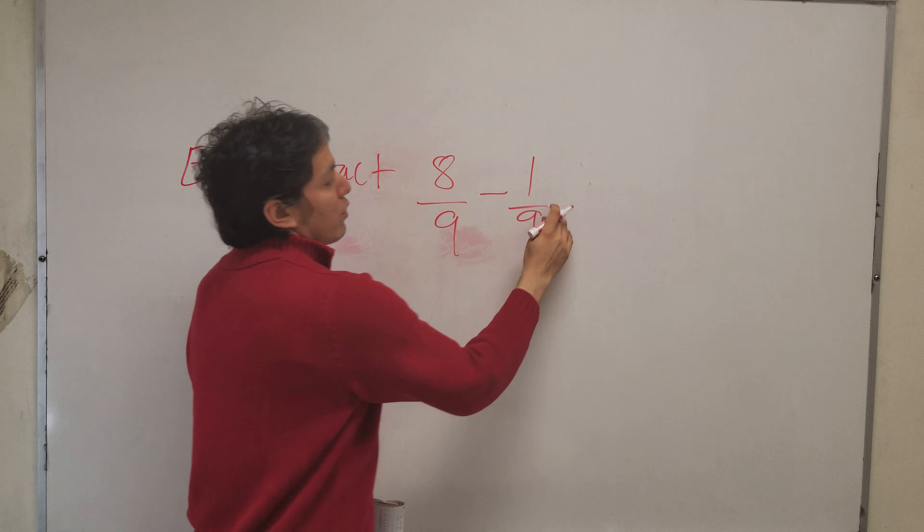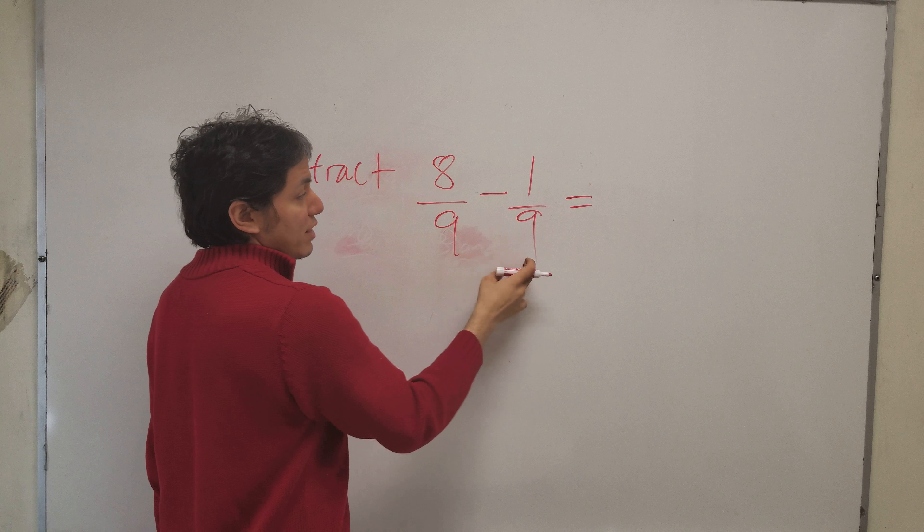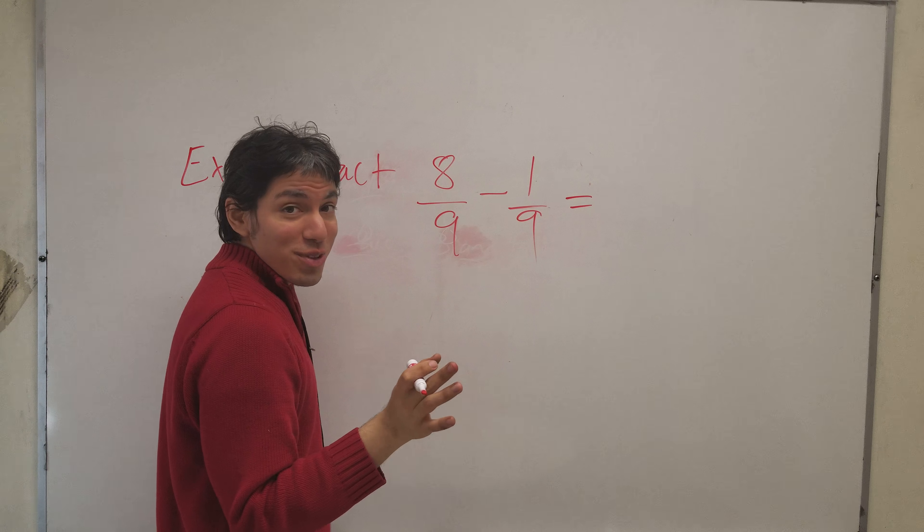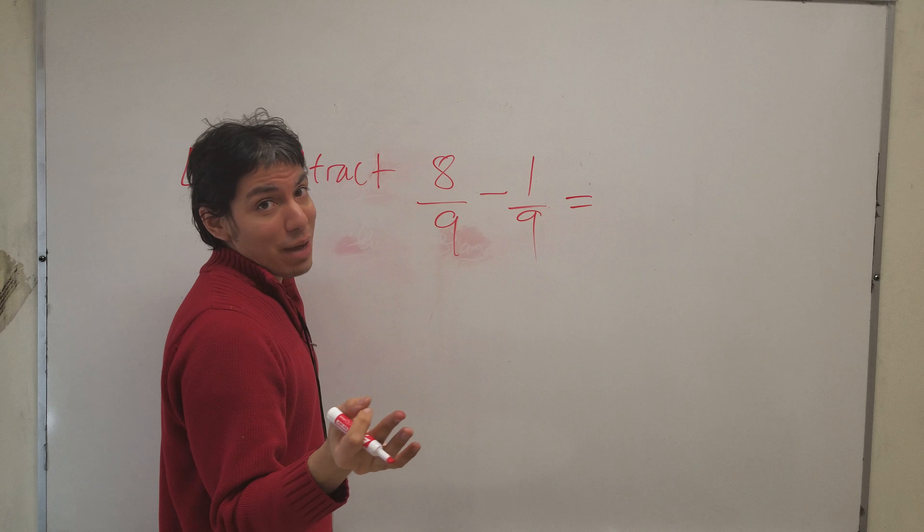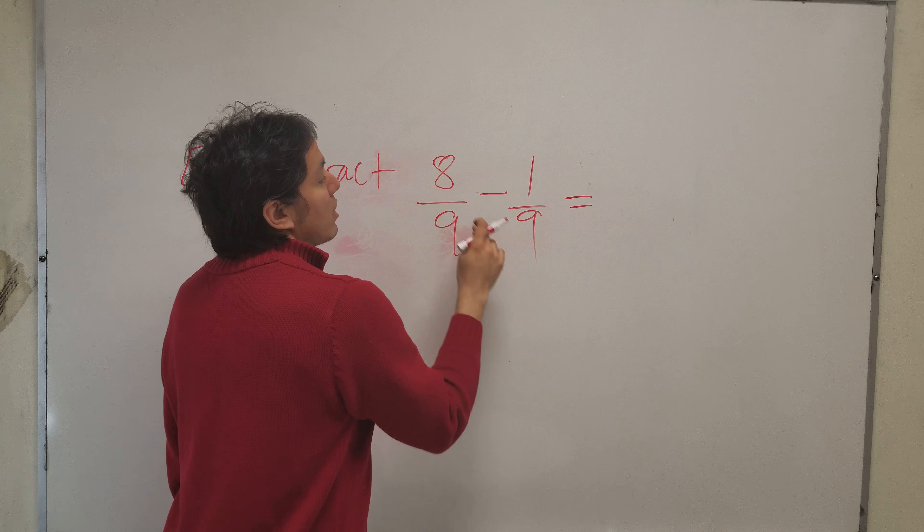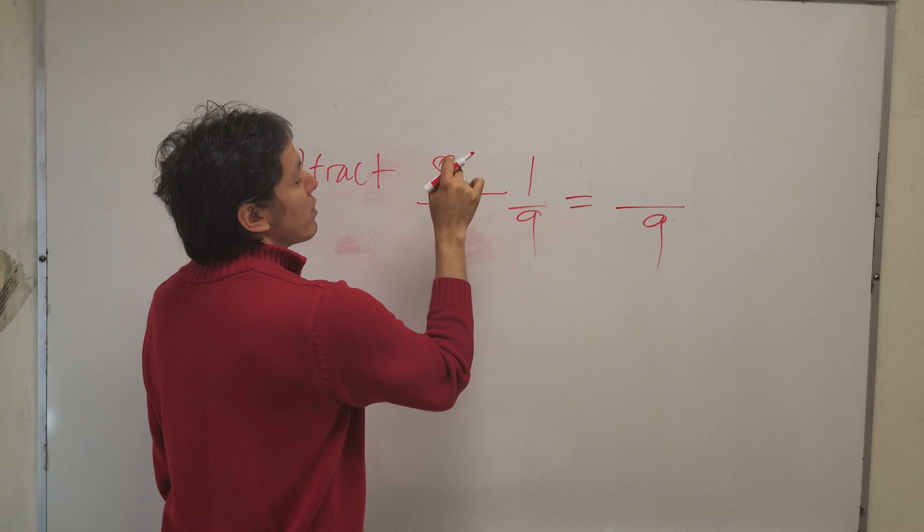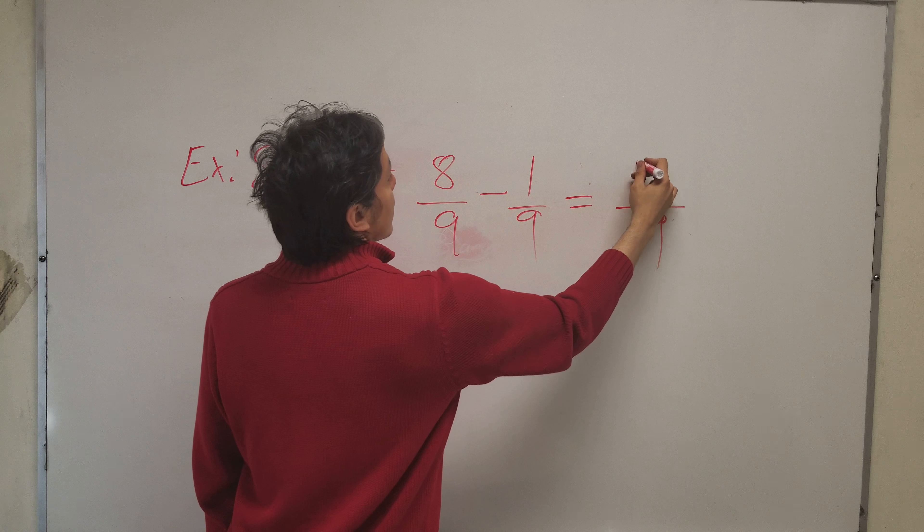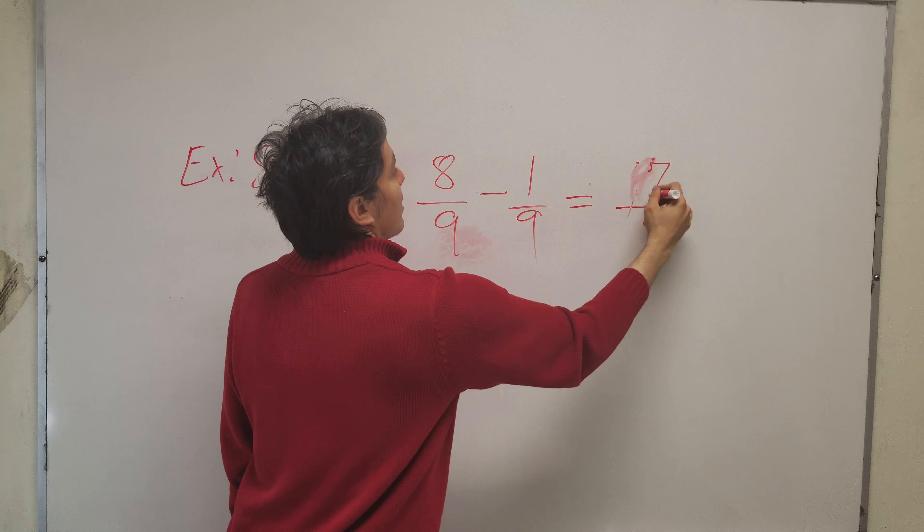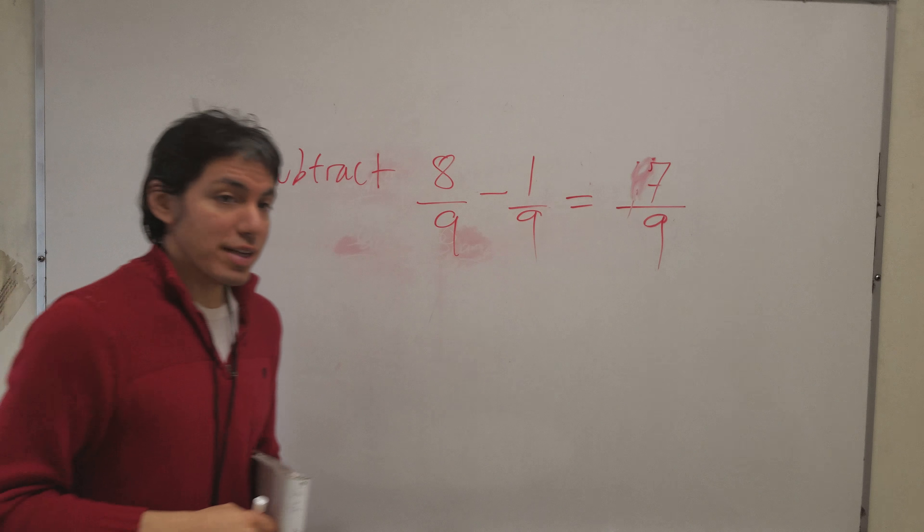Now the thing is some students have a tendency to do this. Sometimes they might actually subtract the denominators and I'm telling you you cannot because if you do you get zero in the denominator and we all know what happens when zero's in the denominator, right? So we can't do that. So we leave the denominator alone so it's still nine but you only subtract the numerator so eight minus one is seven. That's a nice seven. Okay so seven over nine is your final answer.